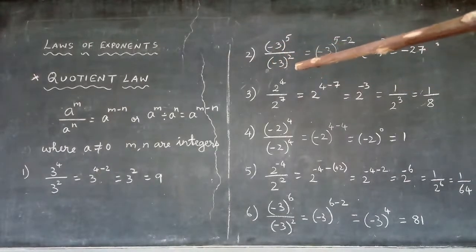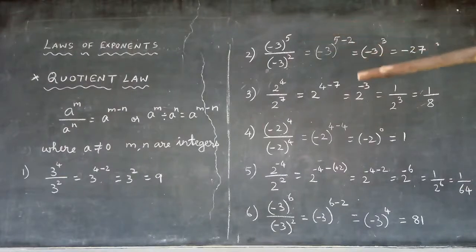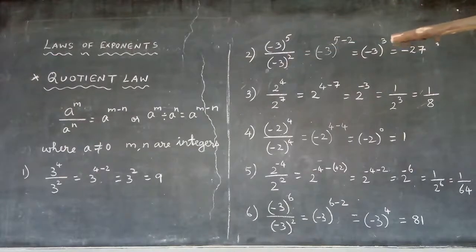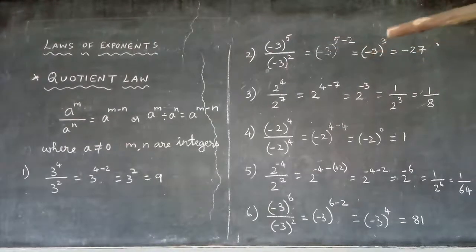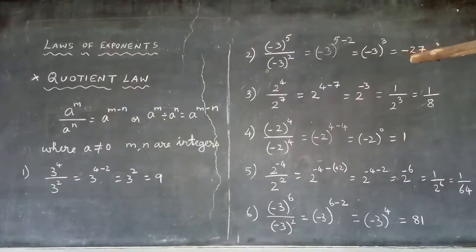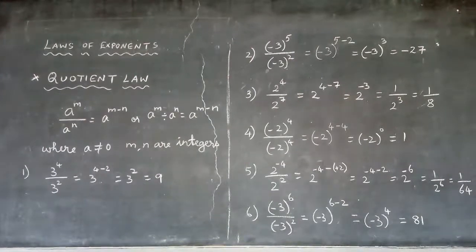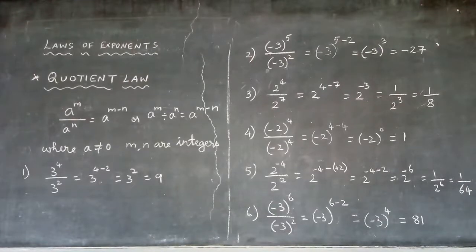Example 2: (-3)⁵ divided by (-3)². Powers are divided with the same base, so write the base (-3) and subtract the exponents: 5 minus 2, which gives 3. So the result is (-3)³. Since the base is a negative number and the power is odd, the answer will be negative. So (-3)³ = -(3³) = -(3×3×3) = -27.